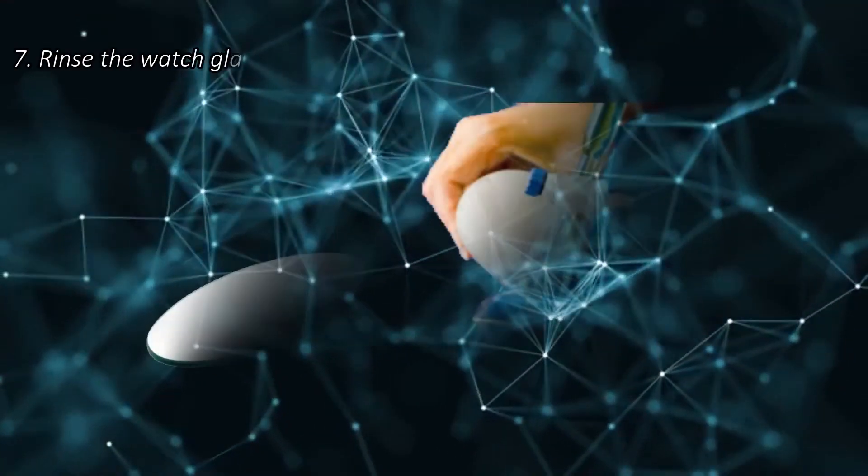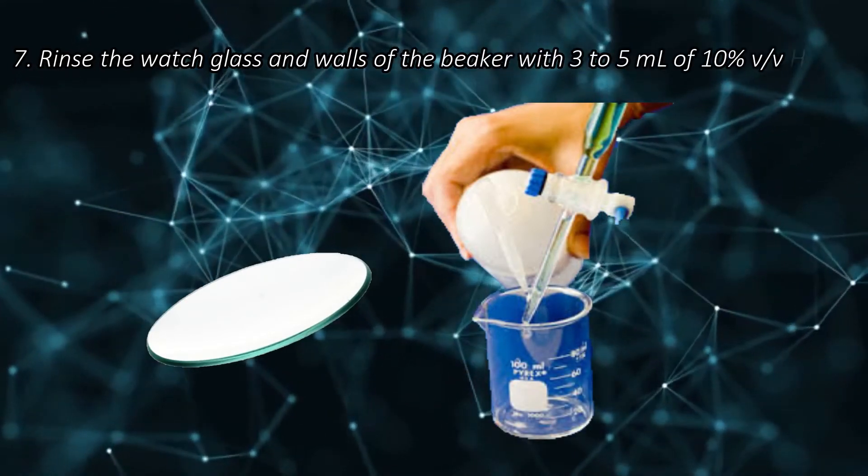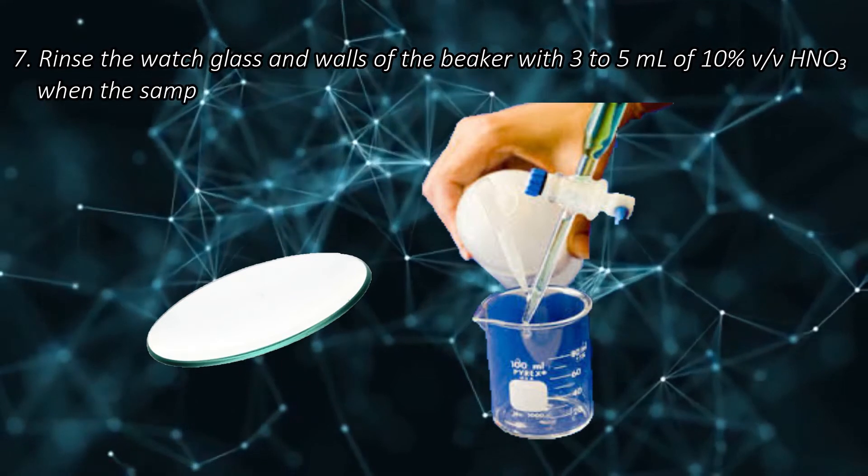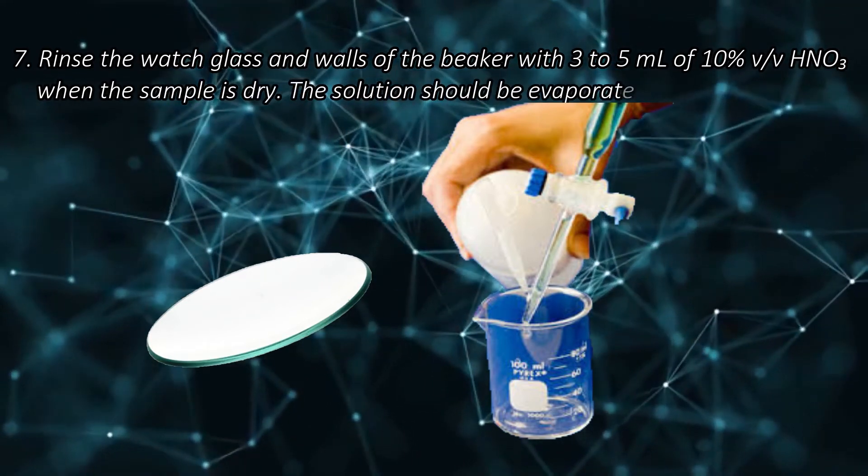Step 7. Rinse the watch glass and walls of the beaker with 3 to 5 ml of 10% volume-over-volume nitric acid when the sample is dry. The solution should be evaporated to dryness.